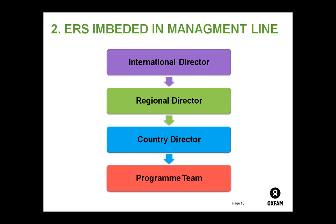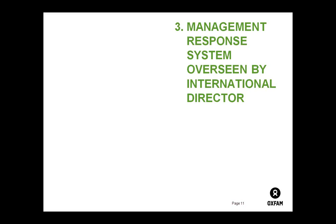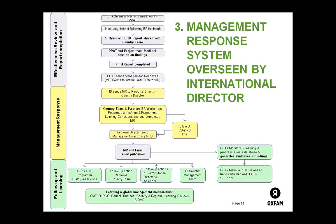Another thing we've really tried to do is leverage Oxfam's organizational structure. Oxfam is both very decentralized at country level but also very hierarchical. These effectiveness reviews are senior management initiatives — they go from international director, regional director, country director, right down to the program team — and it's been really important to have that senior management backing and support. Country teams that are subjected to these effectiveness reviews must complete a management response and send it to the international director, who oversees it.